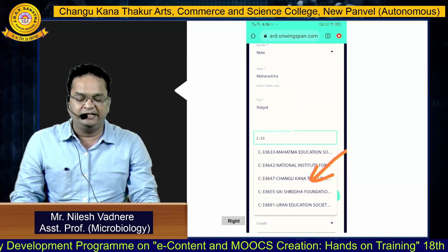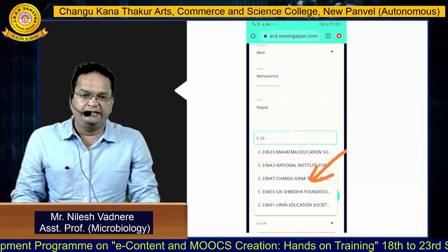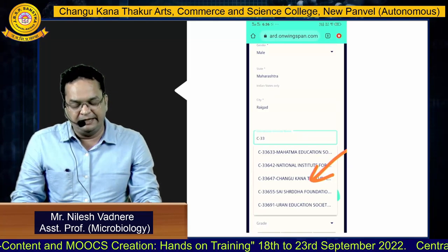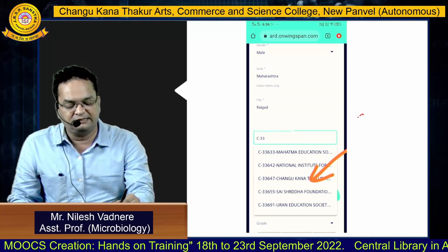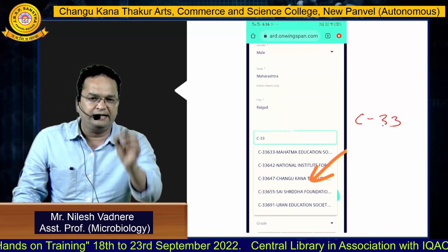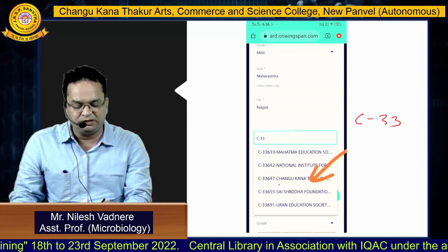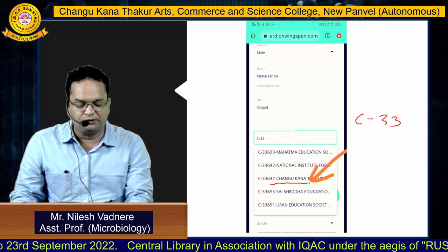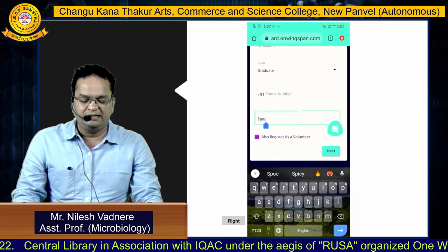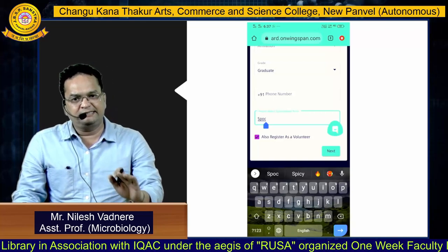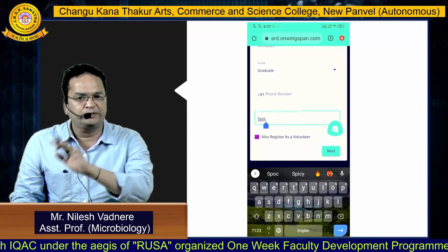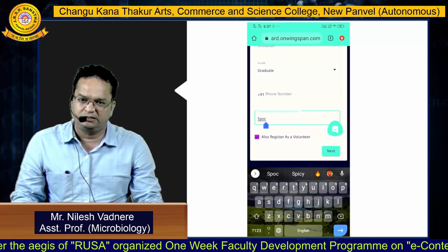Once you select Raigad, it will prompt you to enter the educational institution name. The institution name begins with C-333. Enter C-333 and a dropdown list will appear. Select C-33647 Changu Kana Thakur Arts, Commerce and Science College. The address and other details will be filled in automatically, and you will be mapped to the college's Infosys account.